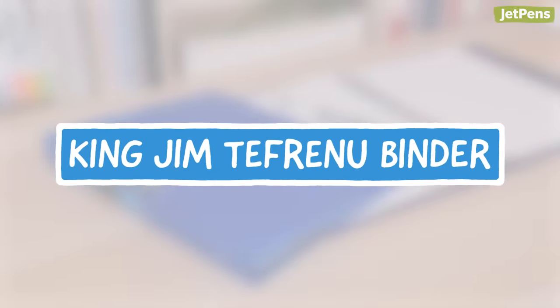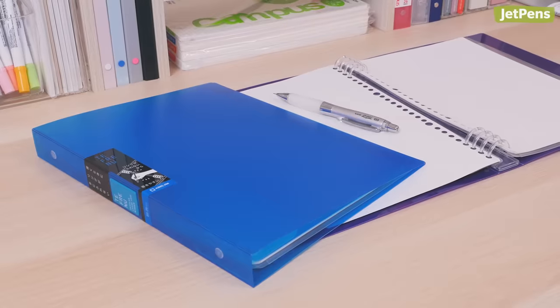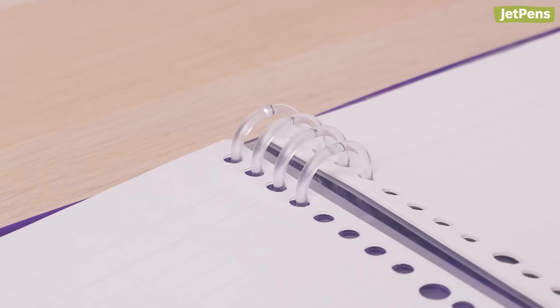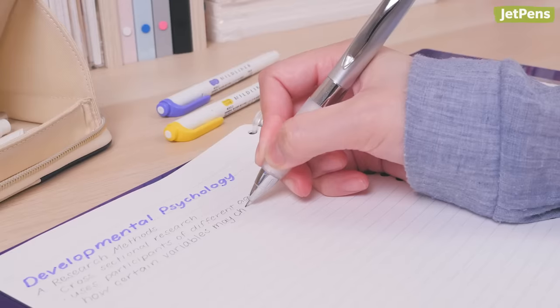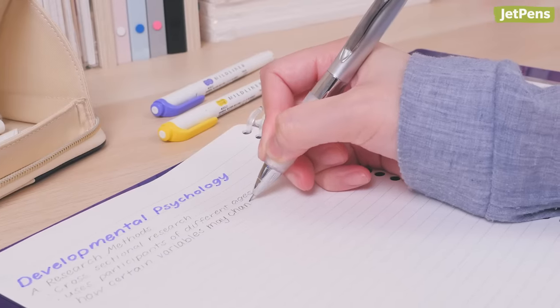No matter which hand you use to write with, you'll appreciate the Tefrenu. Unlike a typical binder, it only has sets of rings at the top and bottom of the spine. That way, you can rest your hand on a flat surface while writing.